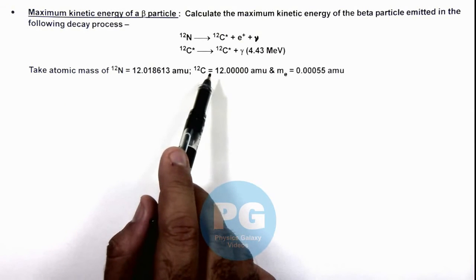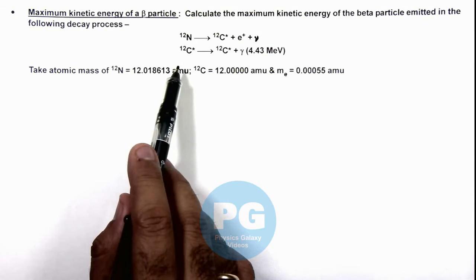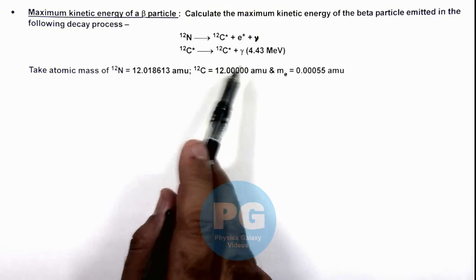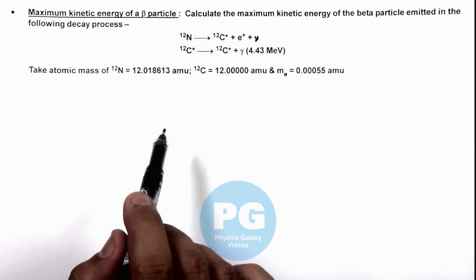First, nitrogen decays to an excited carbon and a beta particle with a neutrino. Later, the excited carbon nucleus comes to ground state and emits the stored energy in form of a gamma ray.